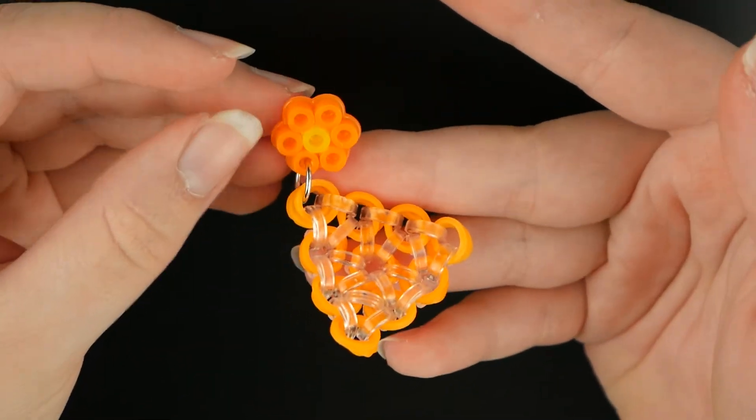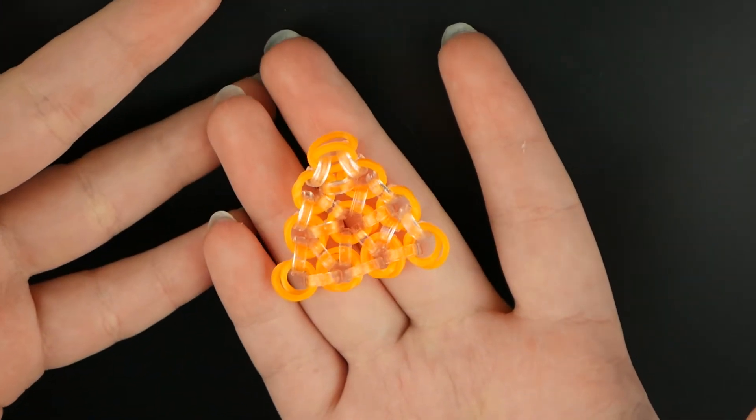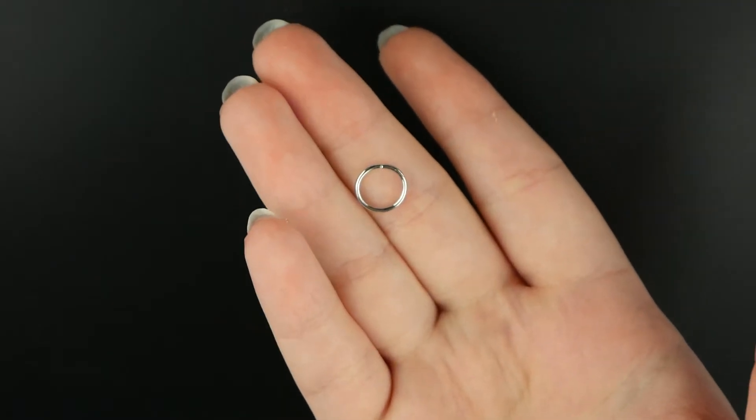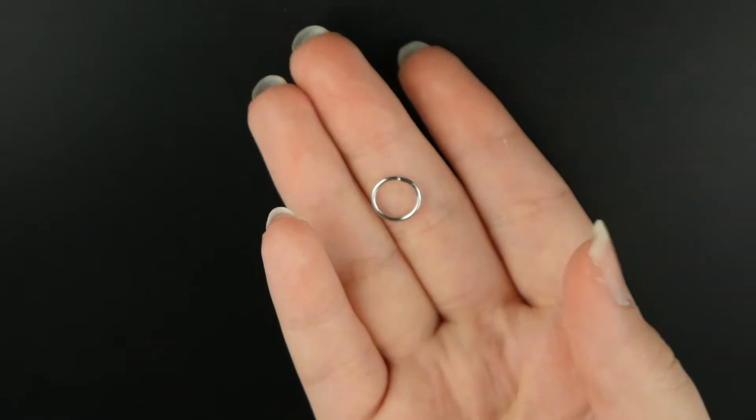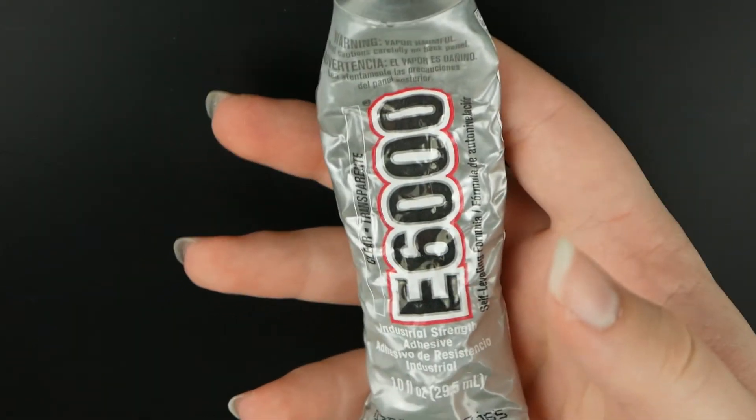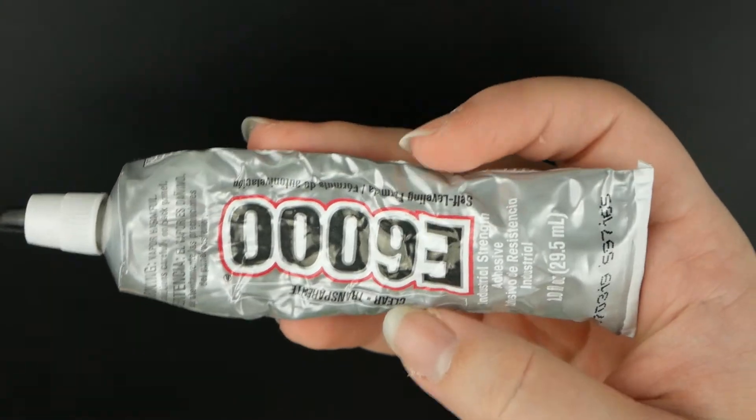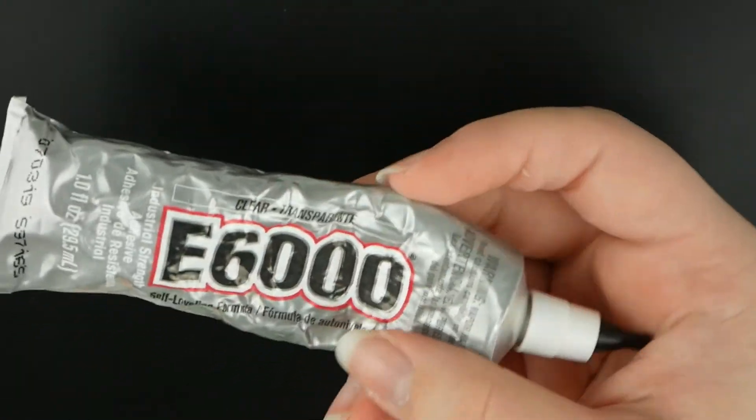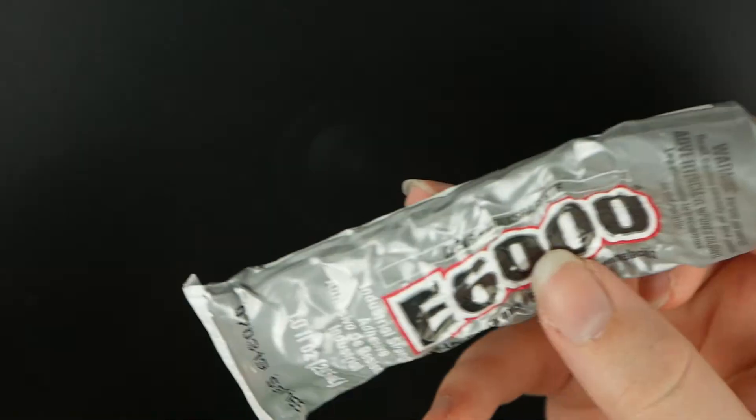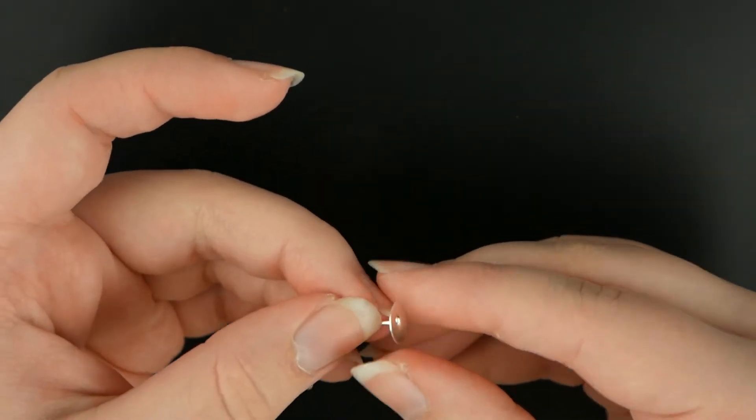Okay, so now we're going to be making this earring. For this earring, you will need the triangle base that I showed how to make in one of my other videos, a large jump ring that is nine or ten millimeters, Perler beads, a pegboard, and an iron. Then you're going to need some sort of glue.